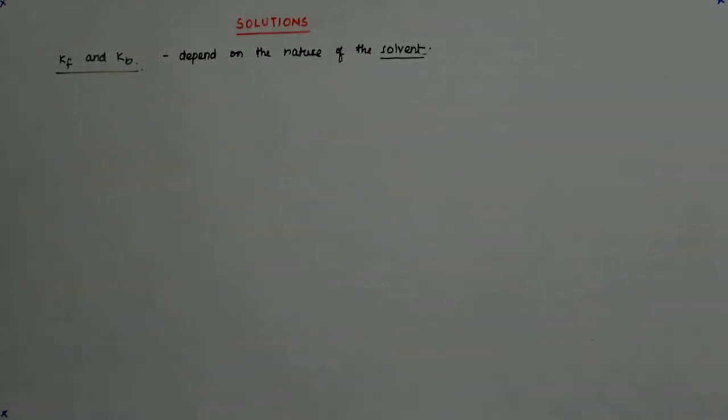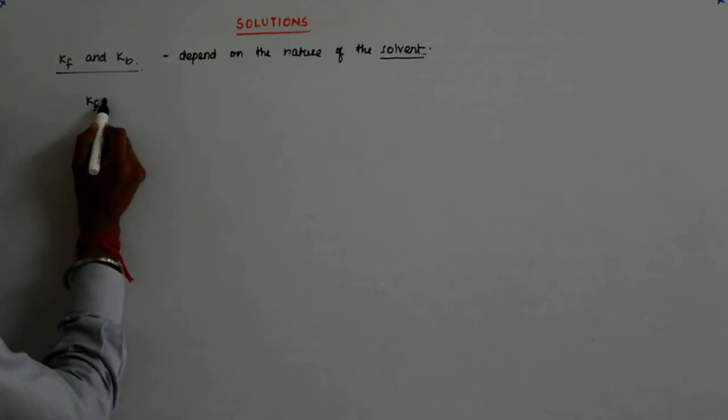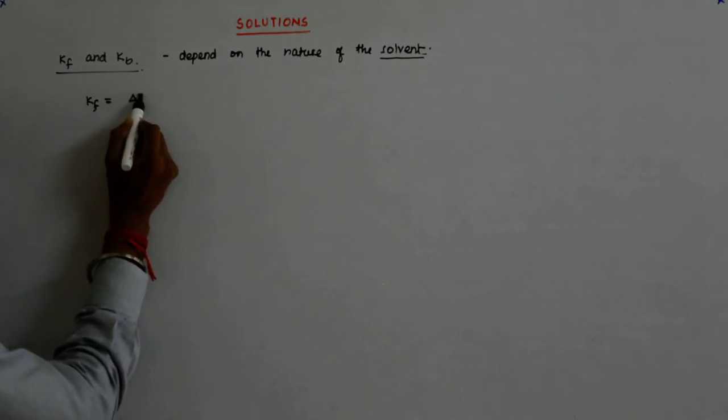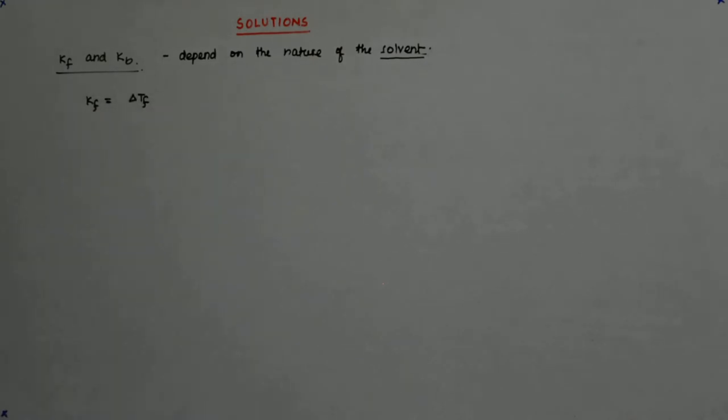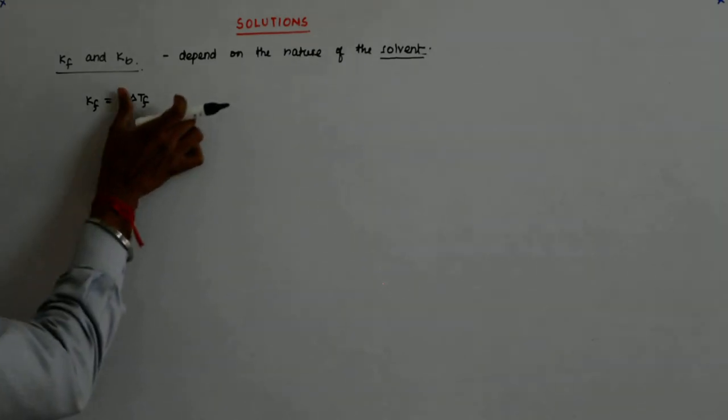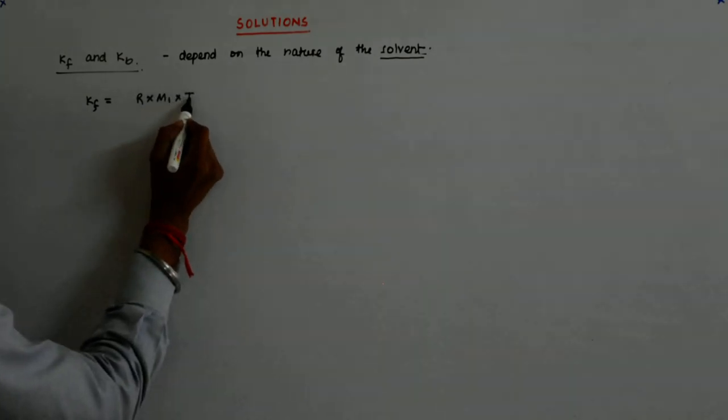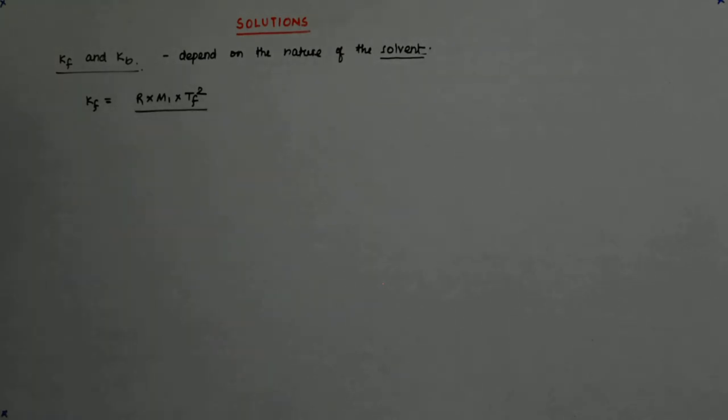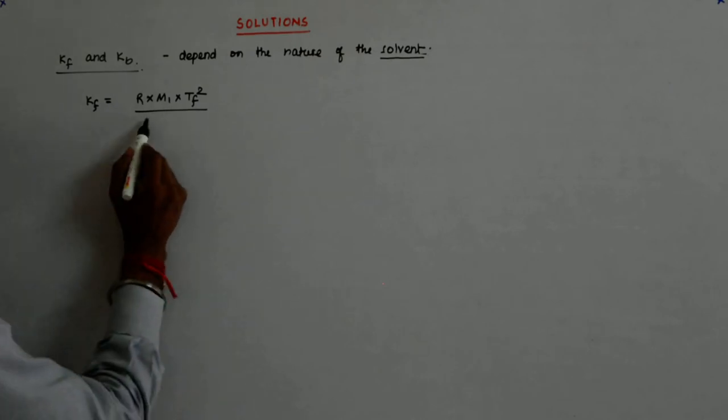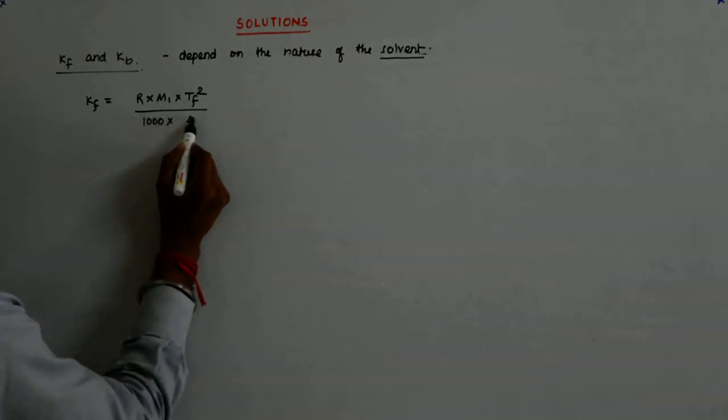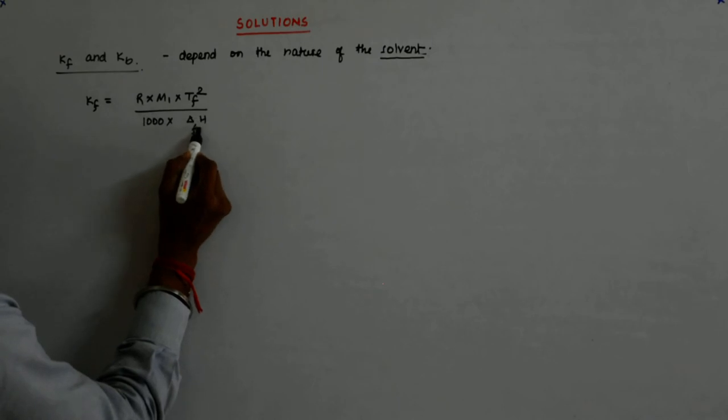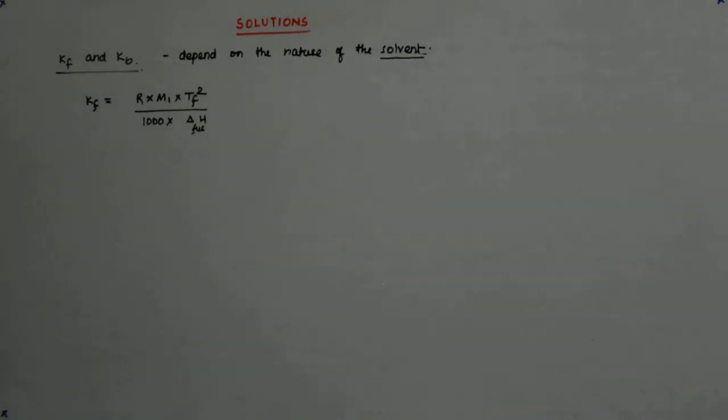And the value of Kf and Kb are given by: Kf is equal to R into M1 into Tf square divided by 1000 into delta H fusion.